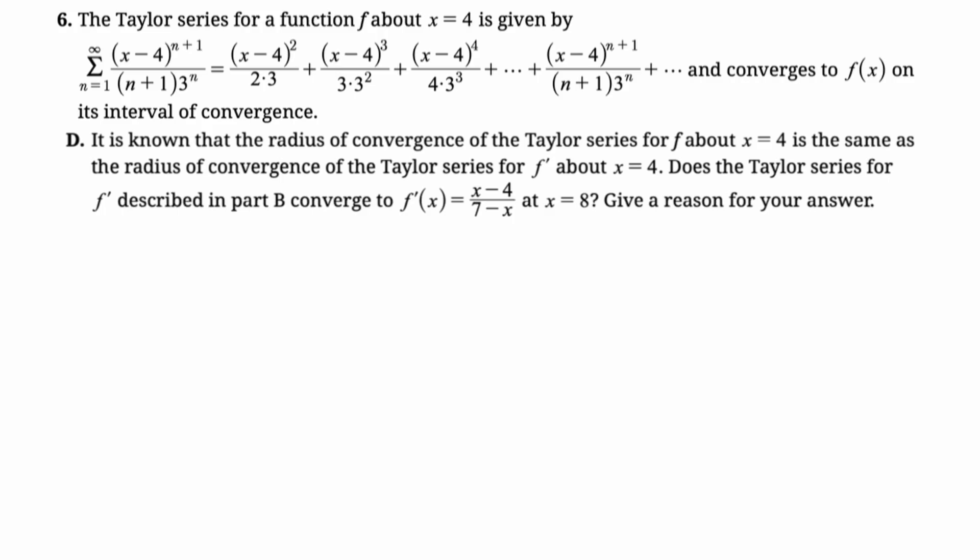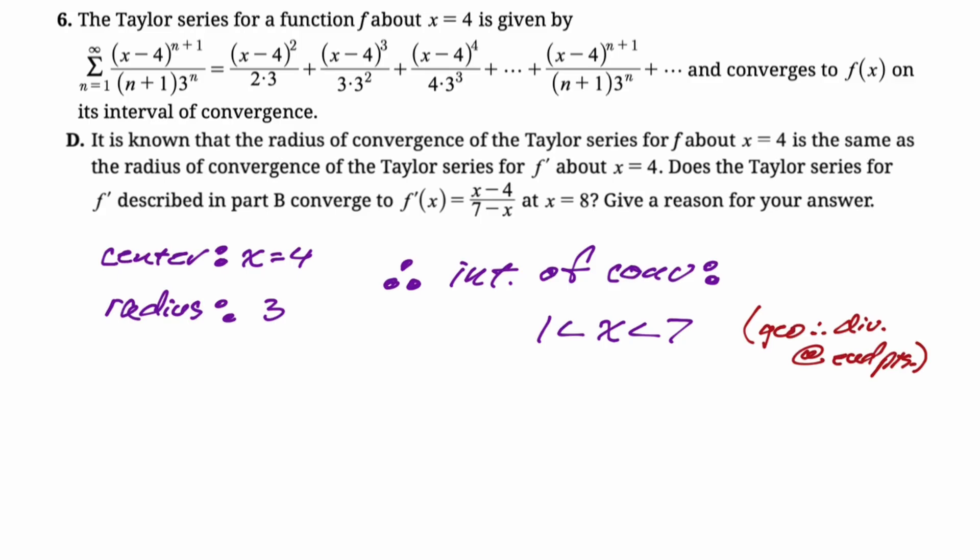So if you think back to part b, the center is 4, and then we found that the radius was 3, right, because we got the absolute value of x minus 4 over 3 is less than 1, so the absolute value of x minus 4 is less than 3, so the radius is 3. So we actually know that the interval of convergence for this is 4 minus 3 is 1, and 4 plus 3 is 7. So that's our interval of convergence. This is actually a geometric series, so we know that it doesn't converge at the endpoints. It will always diverge at the endpoints.